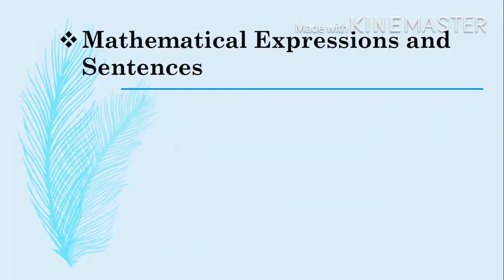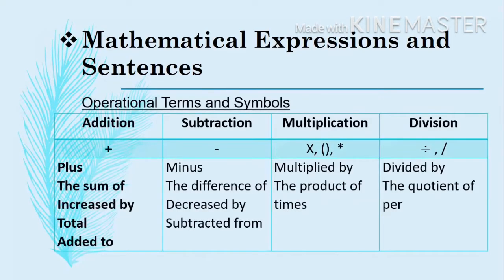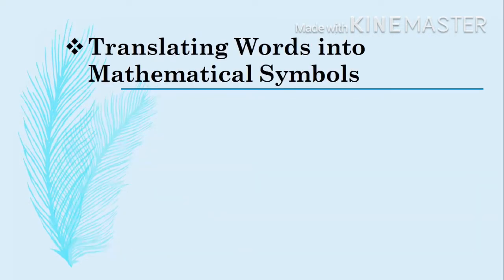Next, we have mathematical expressions and sentences. We have the operational terms and symbols for addition, subtraction, multiplication, and division. Let me remind you that these are some of the operational terms and symbols we use to express a mathematical expression in sentence form and vice versa. Keep in mind those. Let us try to translate words into mathematical symbol or expression.